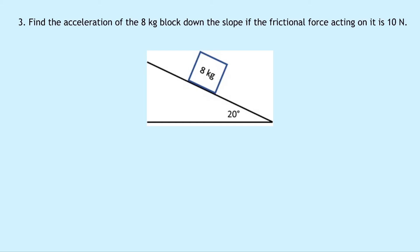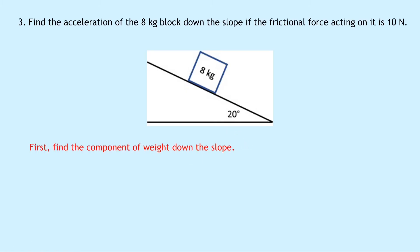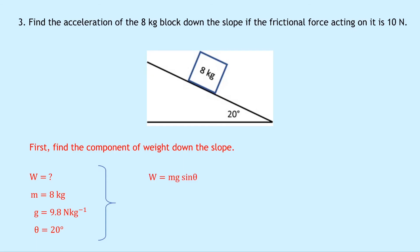Question three says to find the acceleration of the 8 kilogram block down the slope if the frictional force acting on it is 10 newtons. The 10 newtons isn't drawn in the diagram but is given in the question, and the slope makes an angle of 20 degrees with the horizontal. First we find the component of weight acting down the slope: mass is 8 kg, g is 9.8 N/kg, theta is 20 degrees. W = mg sine theta = 8 × 9.8 × sin(20°) = 26.8 newtons.